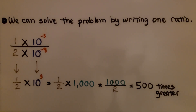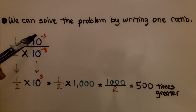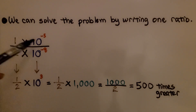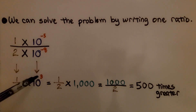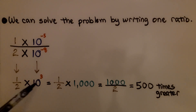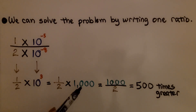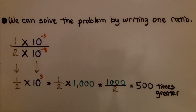We can also solve the problem by writing one ratio. We know that ten raised to the negative fifth power is the greater number, so we write it as the numerator and the other as the denominator — one over two, which is one half. We do our subtraction and get ten raised to the third power. We have one half times ten raised to the third power: one half times one thousand, divided by two, equals five hundred times greater.